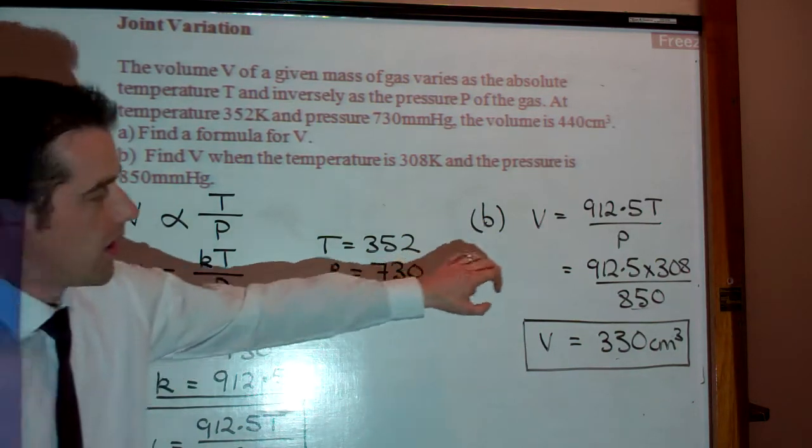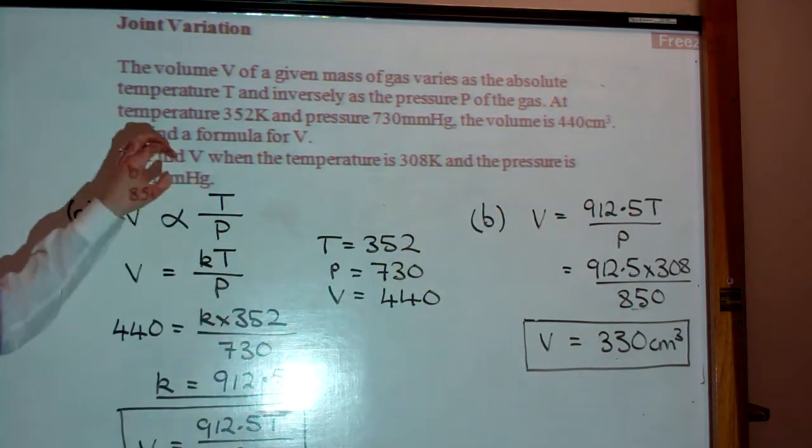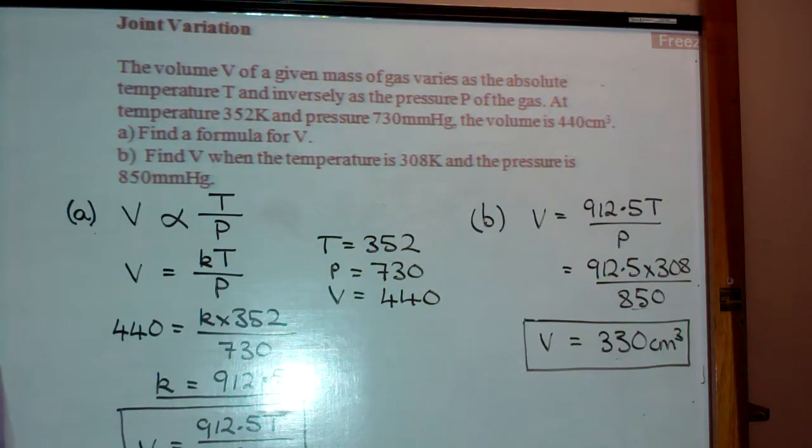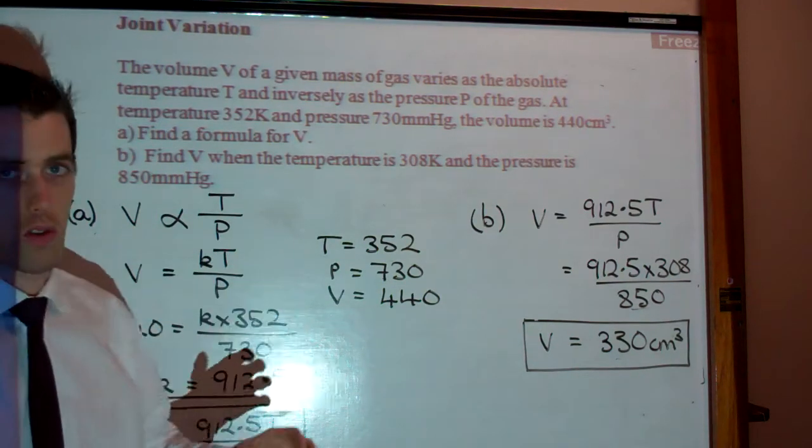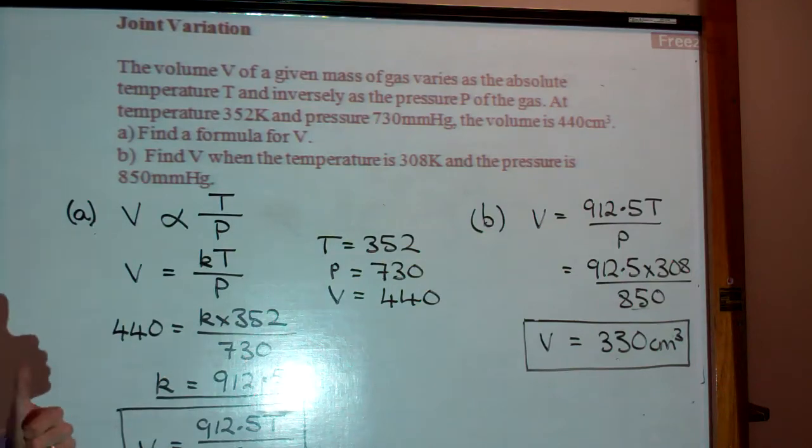And then I'm using that formula in part B to actually figure out a different temperature and pressure. Okay, so that's a wee example of joint variation. I hope that was okay, and I hope that you understood it. Alright, and if you didn't, please see me in class. Okay, cheerio.